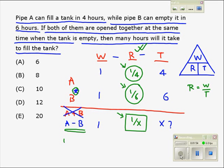Giving us 1 over 4 minus 1 over 6 equals 1 over X.